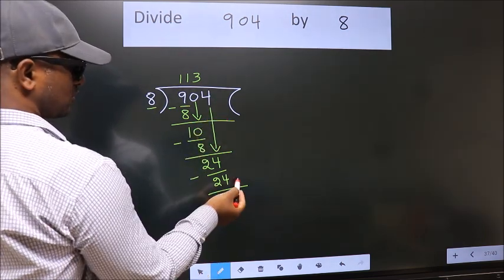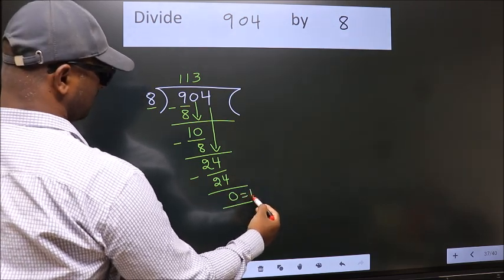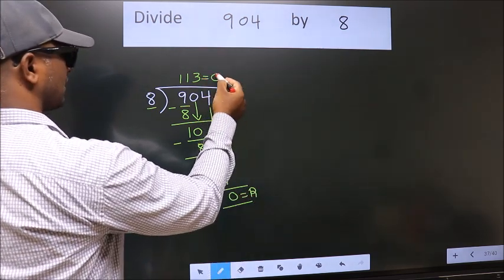No more numbers to bring down. So we stop here. This is our remainder. This is our quotient.